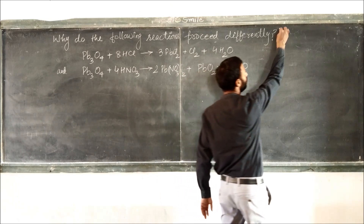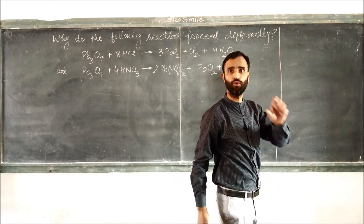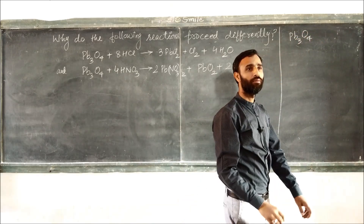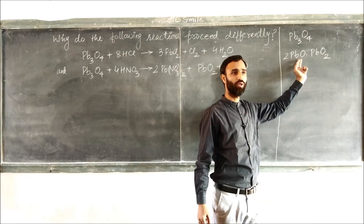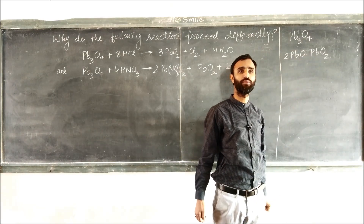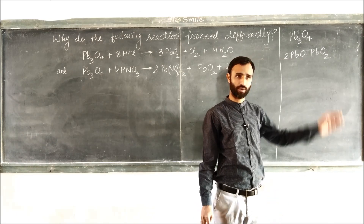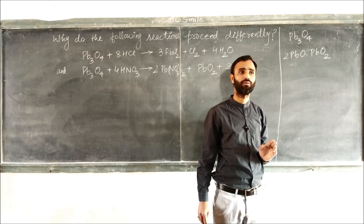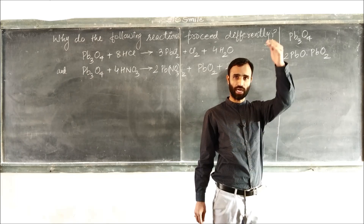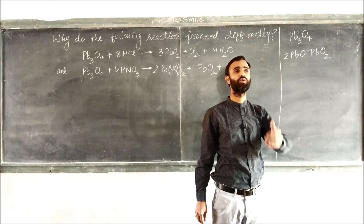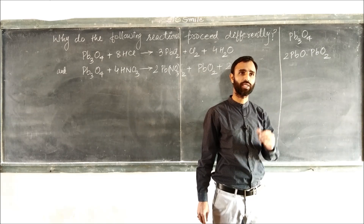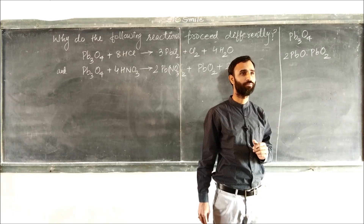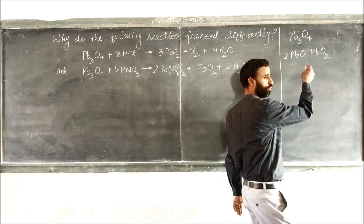First of all, keep in mind that Pb₃O₄ is a mixed oxide. Pb₃O₄ is a mixed oxide of 2 PbO and 1 PbO₂. The group number of lead is 14. In the carbon family, the common oxidation state is +4, and as we go down the group, due to the inert pair effect, the +2 oxidation state becomes more stable than +4.